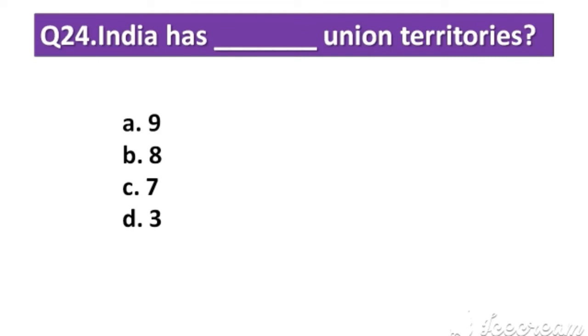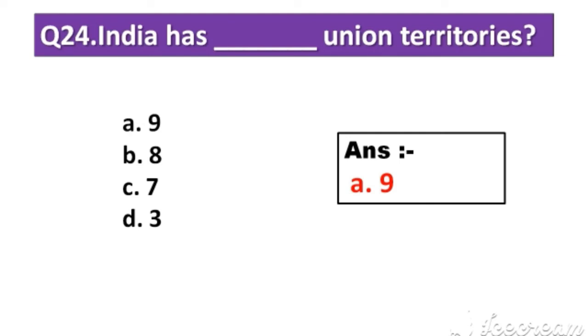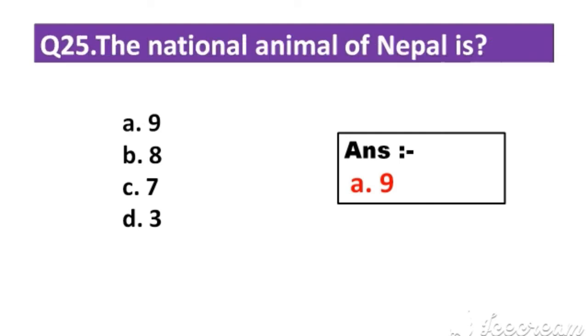Question number 24: India has how many Union territories? Option A: 9. Option B: 8. Option C: 7. Option D: 3. The right answer is Option A: 9.